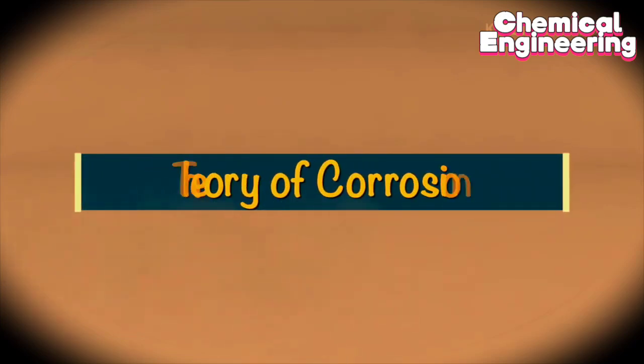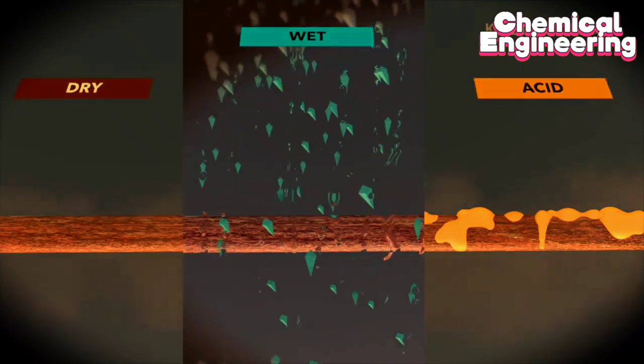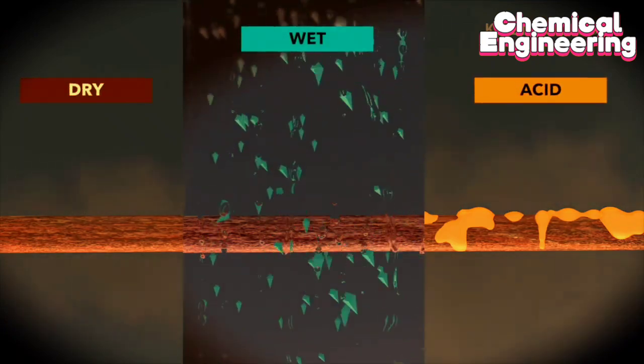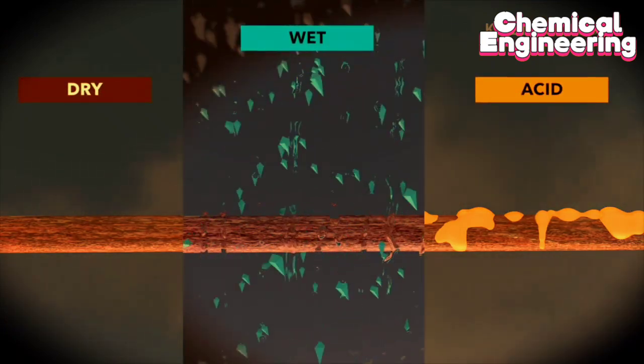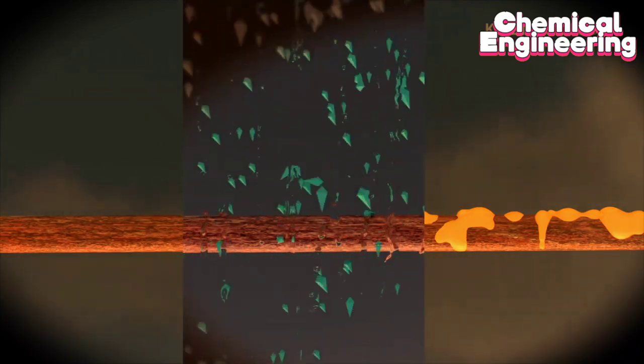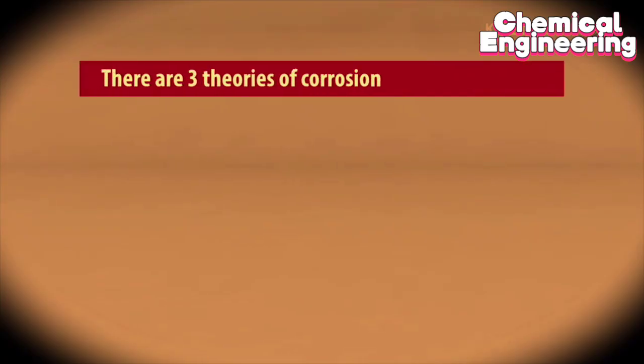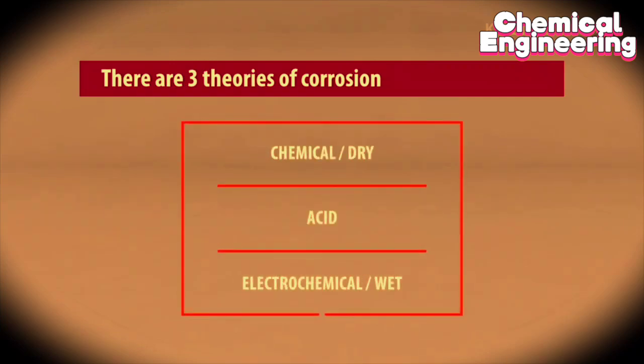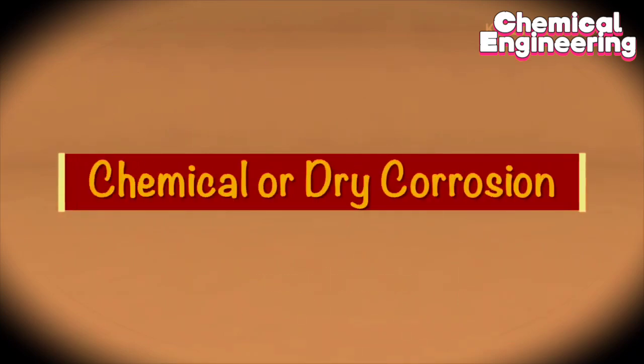Theory of corrosion. Metallic materials are normally exposed to corrosion in dry, wet, and acidic environments. So there are three theories of corrosion: first is chemical or dry theory of corrosion, another is acid theory of corrosion, and electrochemical or wet theory of corrosion.